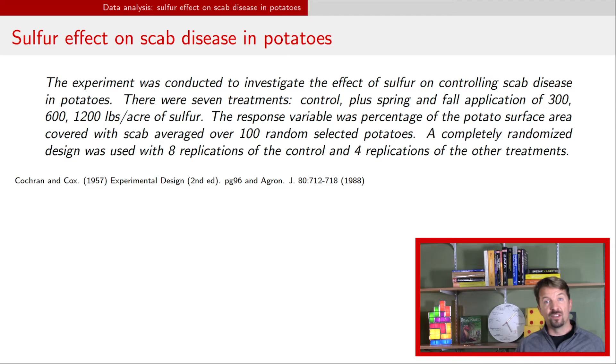In this example, there were three different, well really four different sulfur levels: no sulfur, that's zero, 300, 600, and 1200, what was it, pounds per acre of sulfur. And then we also had a fall application versus a spring application.